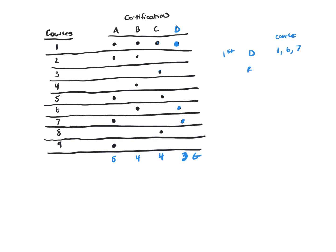Now, let's look at B. B needs one, two. She's already done one, so she needs two. Okay, one, two, and then she needs four and six, but she's already taken six because of certification D.